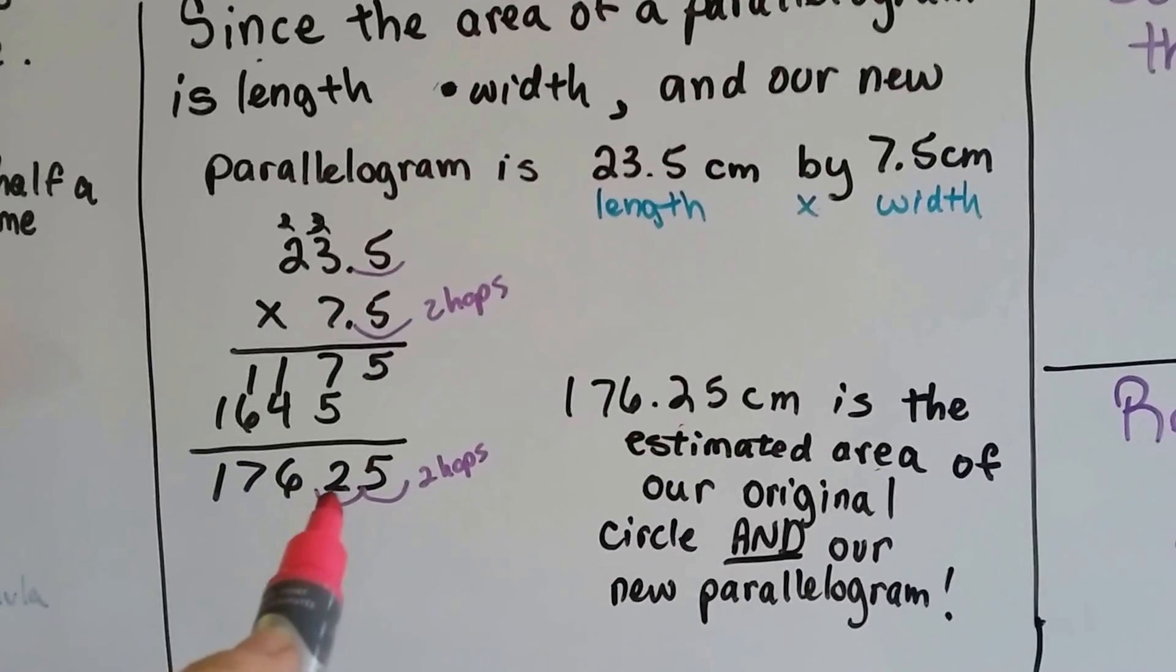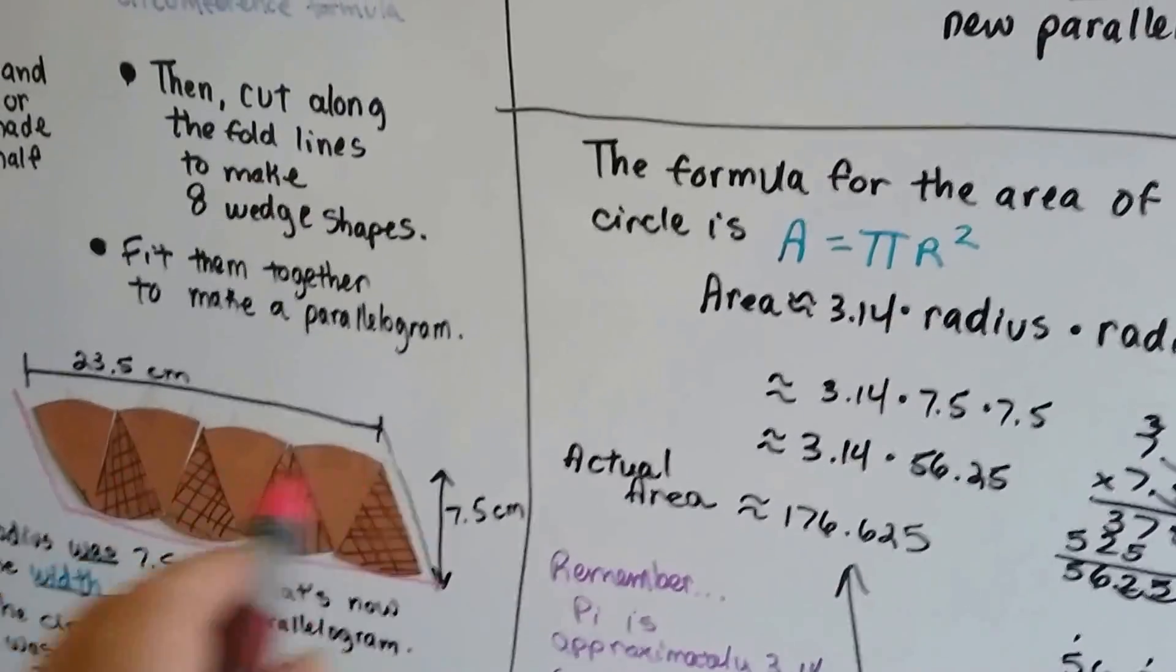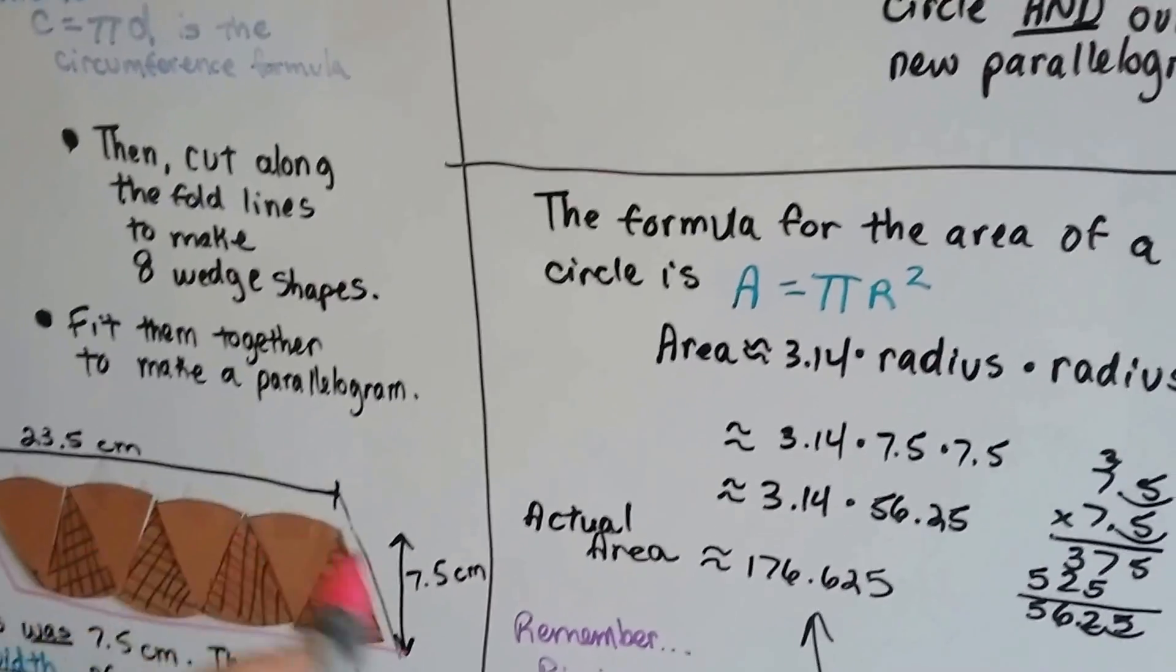Why is it estimated? Because we know my measurements weren't quite perfect, making this into a parallelogram, right?